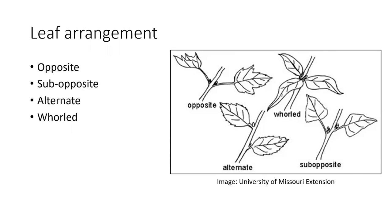Leaf arrangement is going to be one of the first steps in identification, because it quickly eliminates several species. The way leaves are arranged on the stem is going to be very helpful in narrowing things down. Opposite arrangement means these leaves are coming out opposite each other from the stem. Alternate would be one on one side, then it goes to the other side and so on. Sub-opposite is almost opposite but not quite. Whorled is several coming out from the same point of origin.